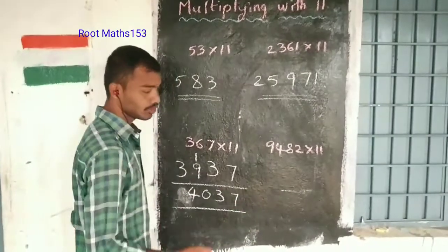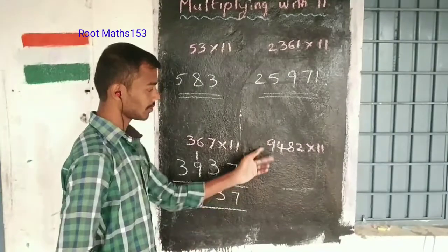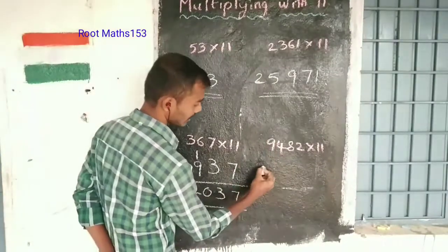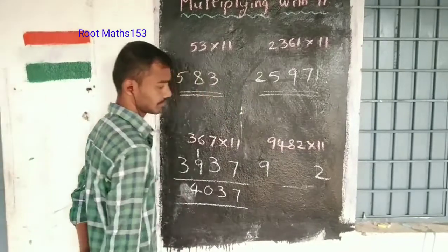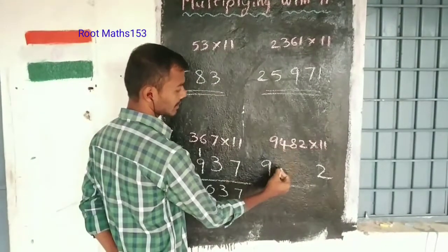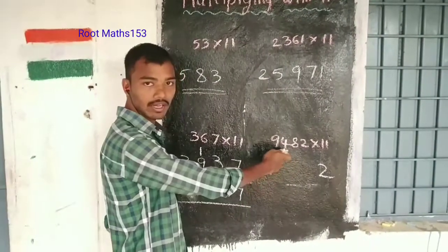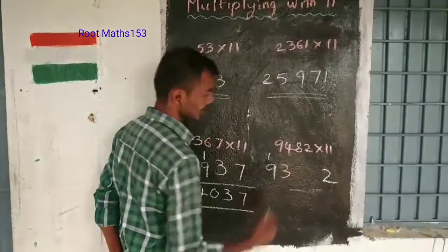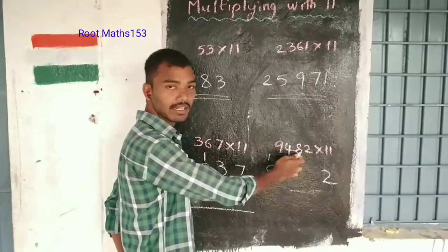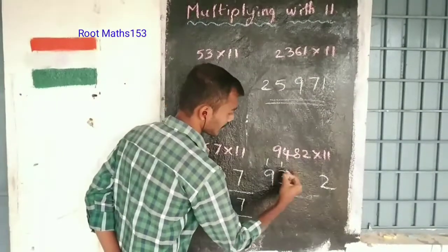Next example: 9482 times 11. There's a little bit of difficulty here. First digit 9, last digit 2. Now add adjacent digits: 9 plus 4 is 13, so write 3 and carry 1. Then 4 plus 8 is 12,